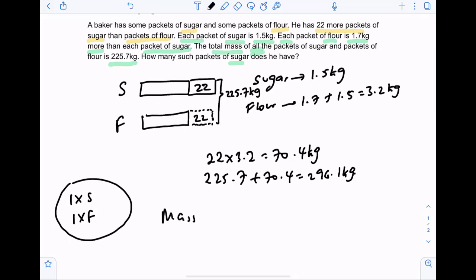So now, what is the mass in one such group? Mass of one group will be equals to the sugar packet plus the flour packet, so 1.5 plus 3.2, which is 4.7 kilograms.